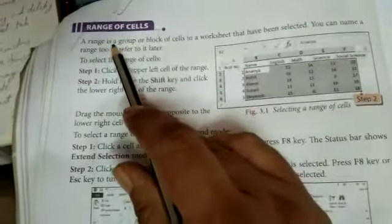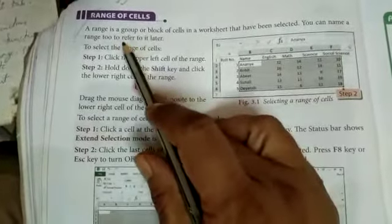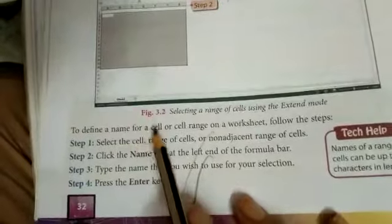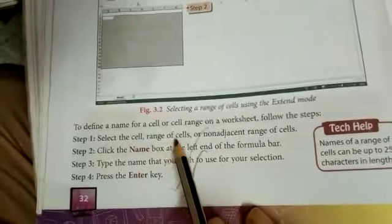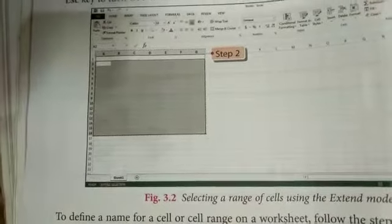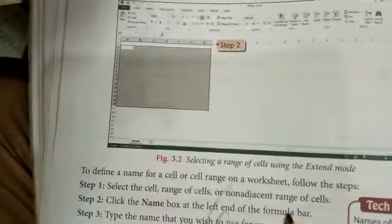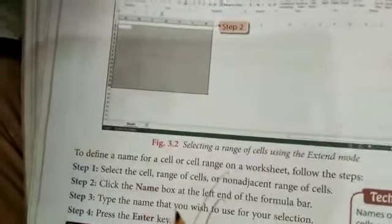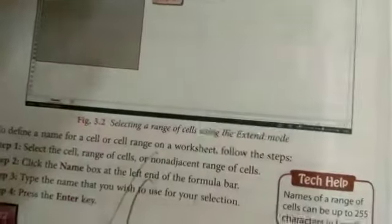Page 32 of your book. Range of cells. A range is a group or a block of cells in a worksheet that have been selected. You can name a range to refer to it later. To define a name for a cell or cell range on the worksheet, follow the steps: Step 1, select the cell range or non-adjacent range of cells. Click the Name Box at the left hand of the formula bar.